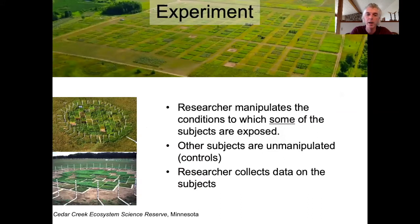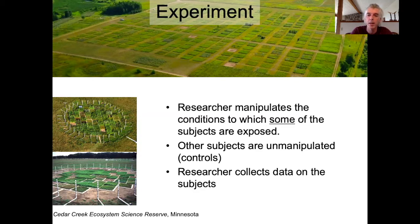The third type of evidence that we'll talk about is experimental evidence. In an experiment, the researcher manipulates the conditions that some subjects are experiencing while leaving other subjects unmanipulated, representing our controls. The researcher then collects data on both the experimental and the control subjects. These pictures are from the Cedar Creek ecosystem manipulation, in which grassland plots were experimentally planted with different numbers of species and experienced different degrees of disturbance such as mowing, to test the effects of biodiversity and disturbance on ecosystem productivity. Some plots experienced manipulations while others remained as controls.